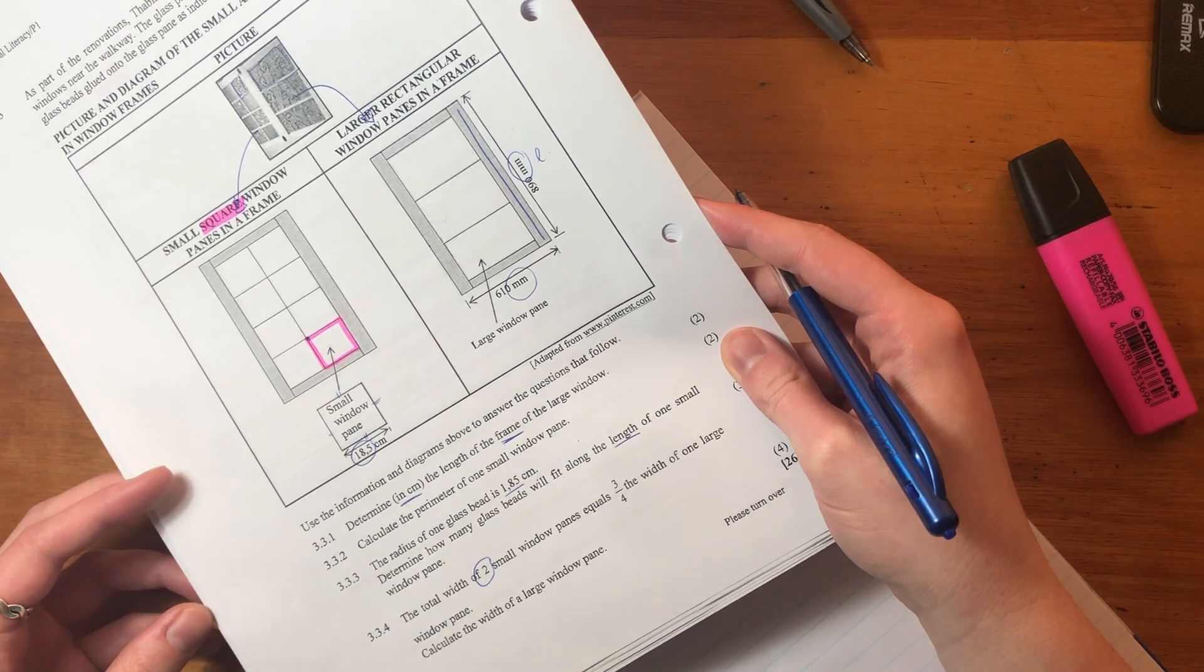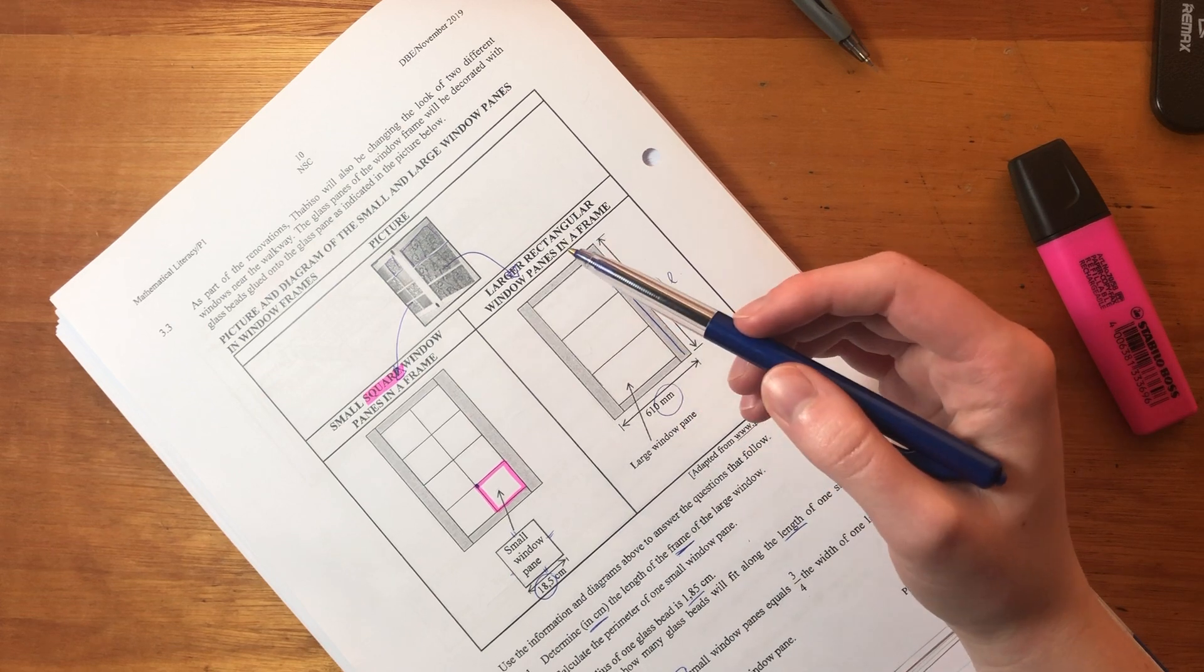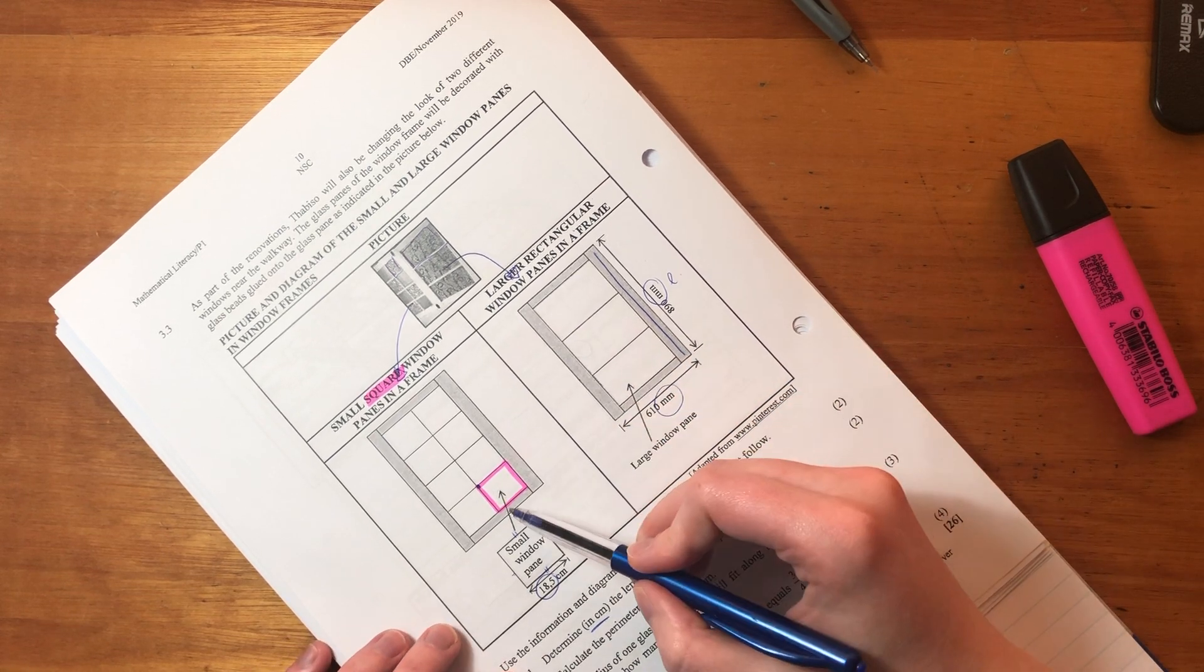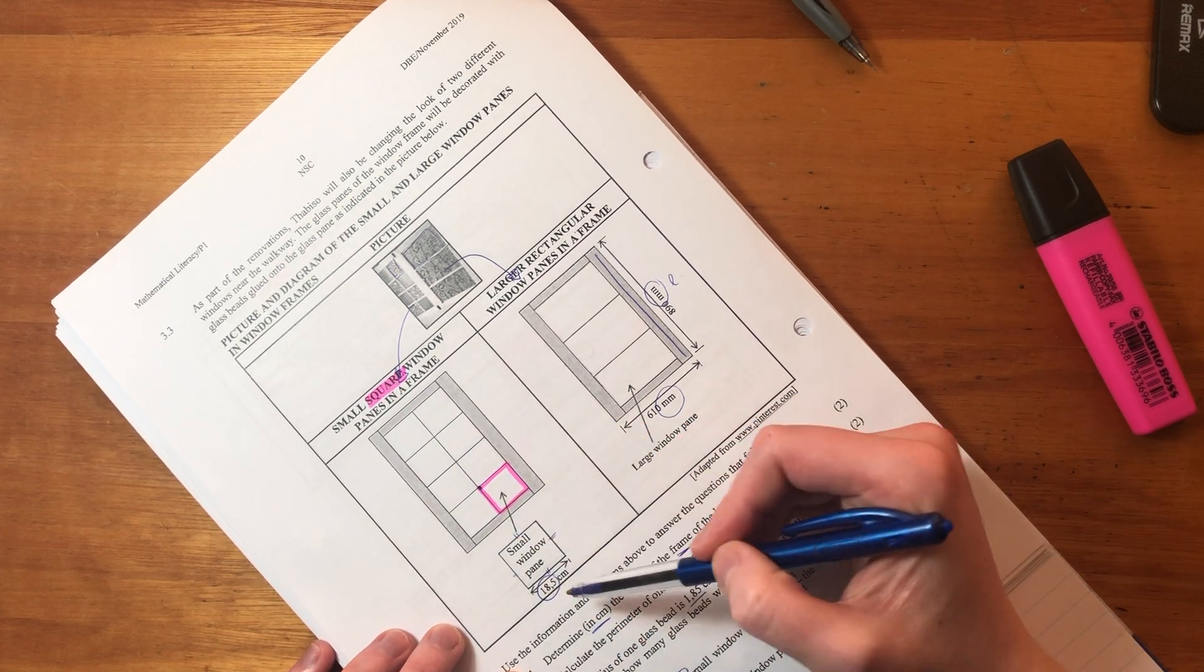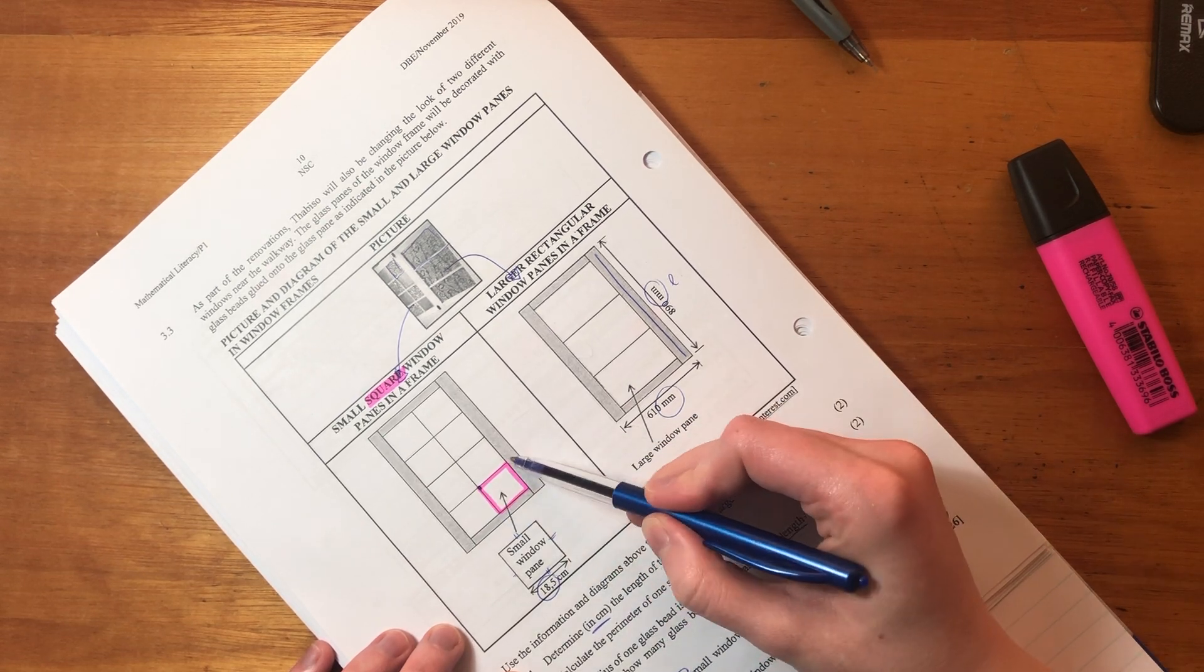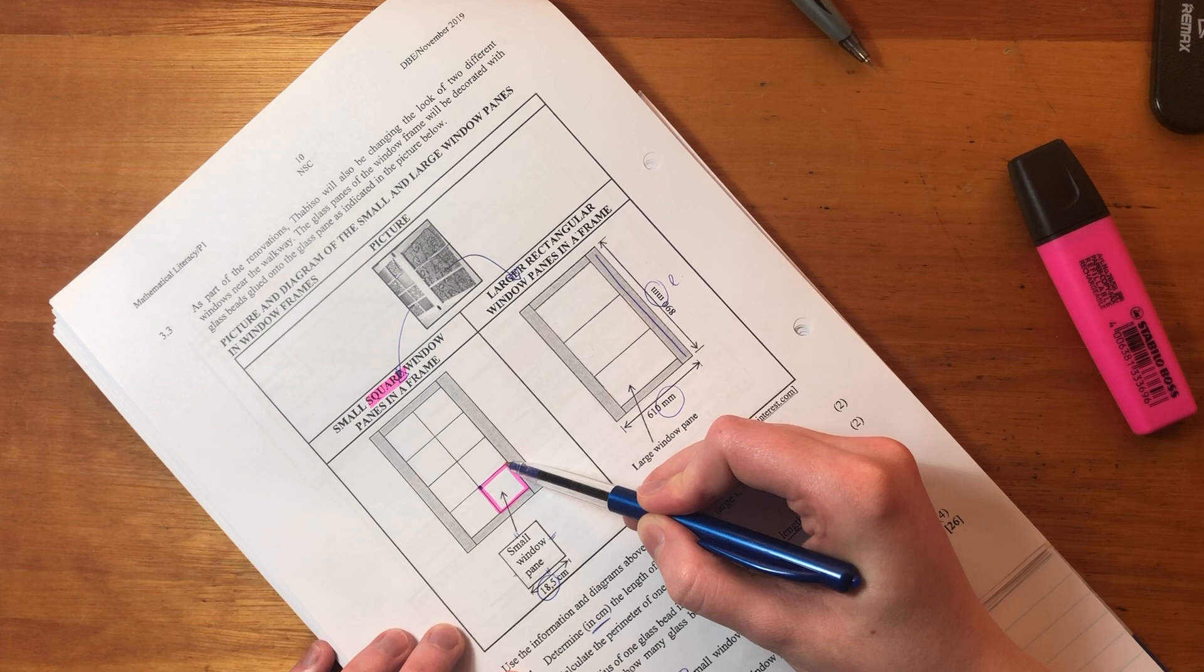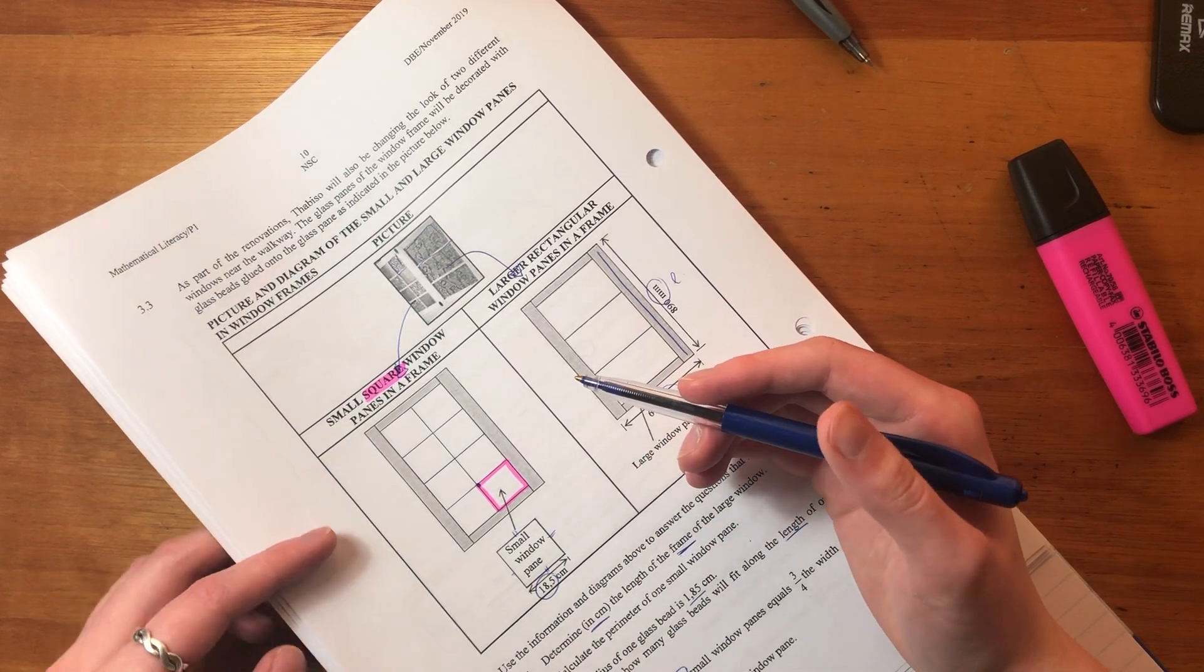Then it says, calculate the perimeter of one small window pane. Now, what I always say to my students is perimeter is like there's a little ant, and this little ant walks the whole way around the edges of a shape. That's what perimeter is. So in this case, we know that the small window pane is a square, and that each side is 8.5 centimeters. So if the ant was going to walk around this pane, it would walk 8.5 centimeters that way, 8.5 centimeters there, 8.5 centimeters there, and 8.5 centimeters to return to where she started. I'm making it a little girl ant.